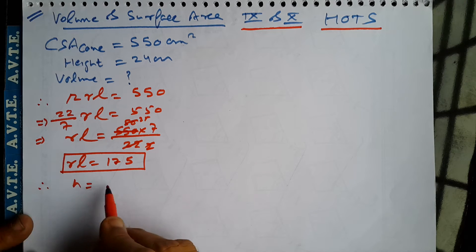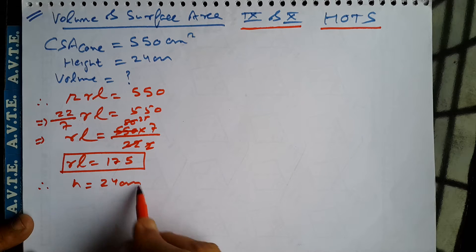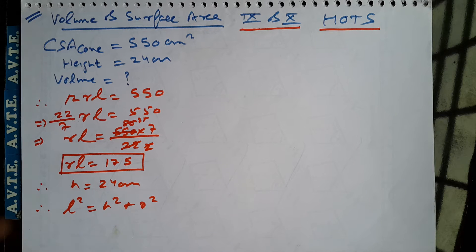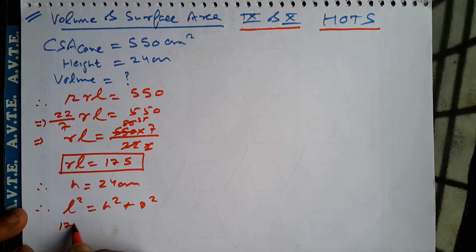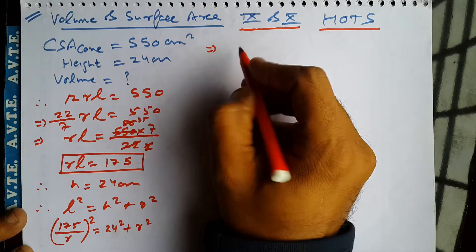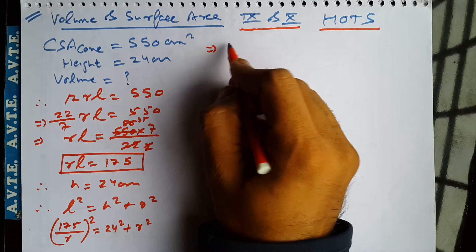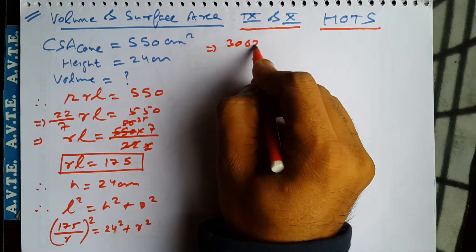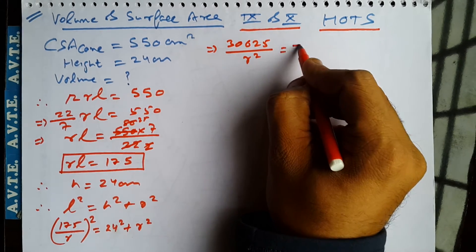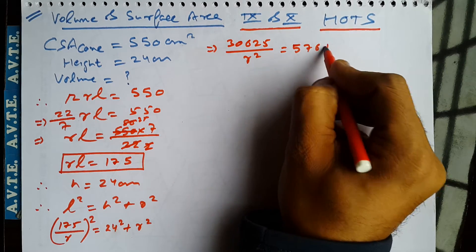Now in the question we have height as 24 cm. We know that L square is H square plus R square. So we can write L as 175 by R, and squaring both sides: 175 by R whole square is 24 square plus R square.